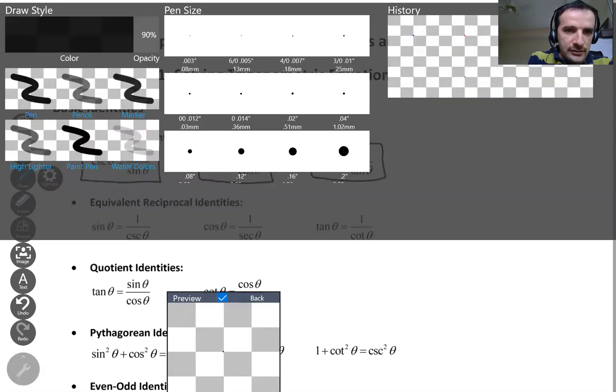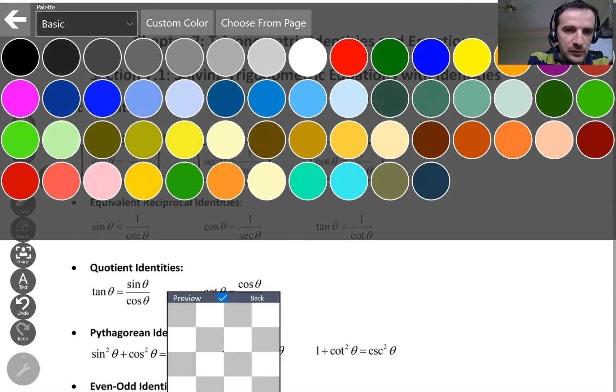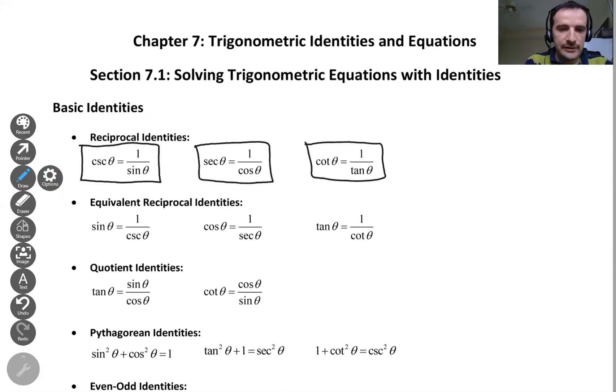And of course, you can switch these identities and obtain these equivalent reciprocal identities. Sine is equal to 1 over cosecant. Cosine is equal to 1 over secant. And tangent is equal to 1 over cotangent.